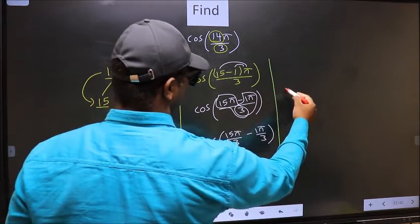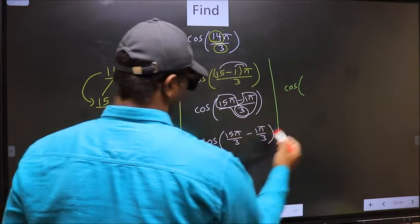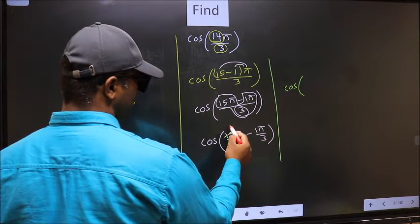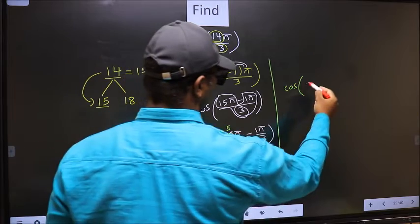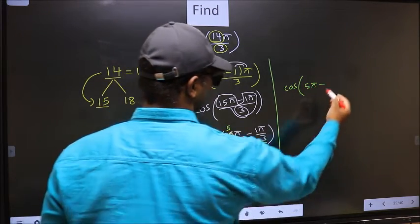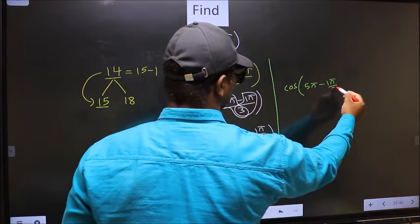Next, cos. Now here you should cancel. 3 1s, 3 5s. So we get 5π minus this, no change, 1π by 3.